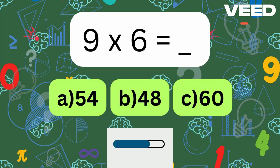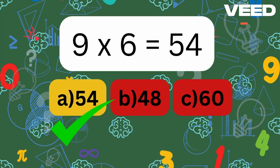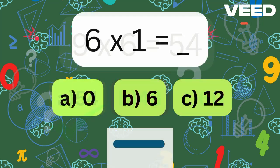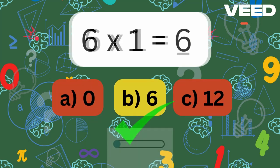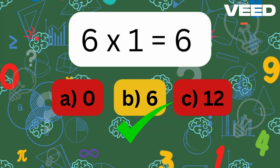9 times 6 is? 9 times 6 is 54. 6 times 1 is? 6 times 1 is equal to 6.